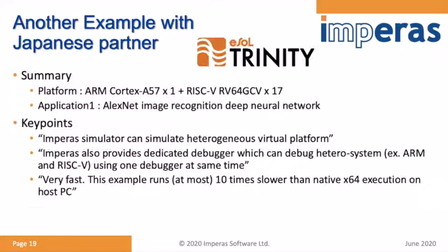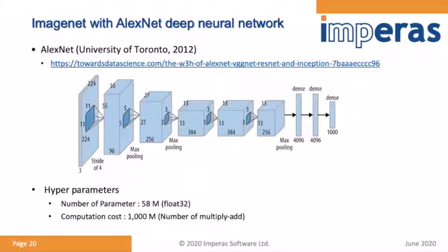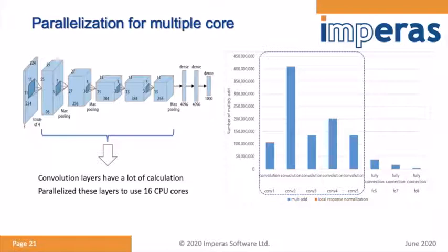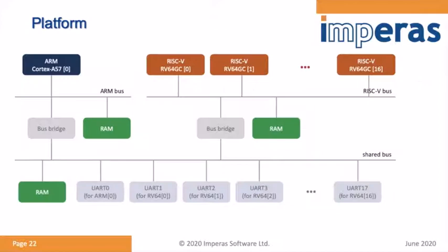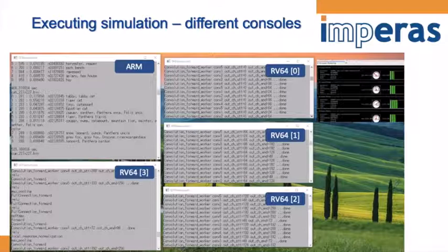Another project with partner ESOL Trinity in Japan features an ARM Cortex-A57 and 17 RISC-V processor cores managing the LXNet image recognition deep neural network. This algorithm involves very significant floating-point operations and multiply-accumulates, lending itself well to parallel processing. The ARM A57 acts as the control processor while the 17 RISC-V processors handle the bulk of the compute workload.